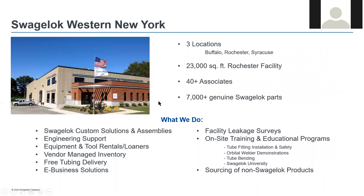A little bit about Swagelok Western New York. We have three locations in Buffalo, Rochester, and Syracuse. Our Rochester facility is our headquarters. We have a 23,000 square foot facility. We currently have over 40 associates working at Swagelok Western New York. And between the three locations, we have over 7,000 Swagelok parts on hand.